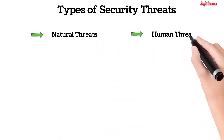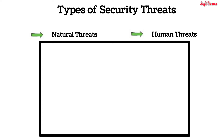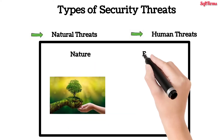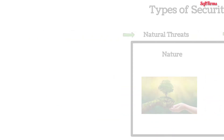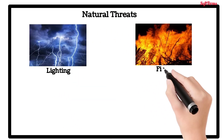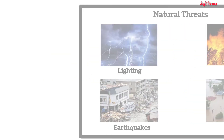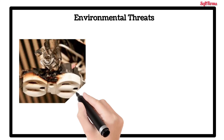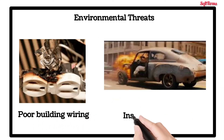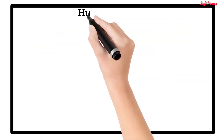Types of security threats: there are two types of threat categories — natural and human threats. Natural or environmental threats are either from nature or the system's environment. Natural threats can include lightning, fires, earthquakes, or floods. Environmental threats can include poor building wiring or insufficient cooling for systems.